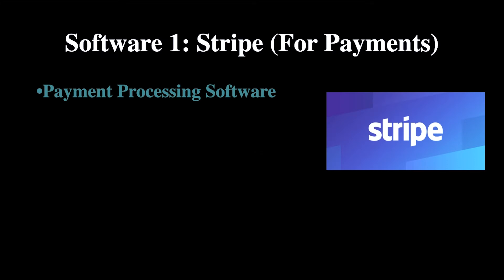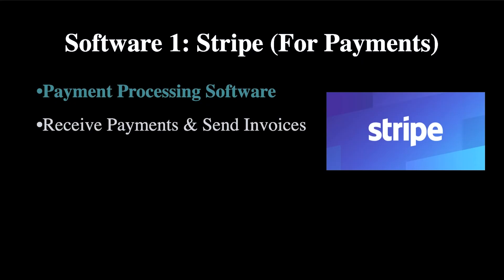First, let's talk about software number one: Stripe, which you'll be using for payments. Stripe is a payment processing software that charges a 2.9% fee per transaction, which is pretty standard. Once you're making over $50K a month, you can hit them up via their support — which is really good, available in both Spanish and English — and negotiate lower fees. You can use Stripe to both receive payments and send invoices.